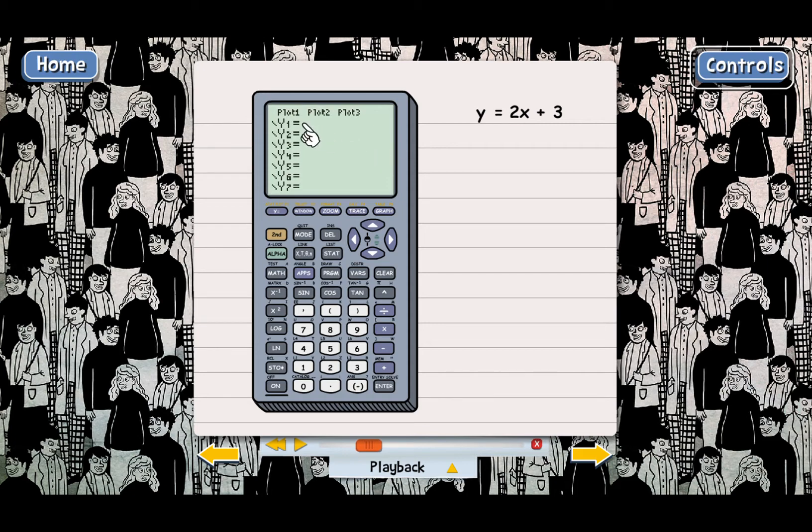See, there's a y1 equals, a y2 equals, a y3 equals, and it goes on down. The calculator has room to enter a lot of functions at once. That's what these are for, and that is useful in case you want to graph a system of equations or something. We're only going to enter in one equation here, so we just need to use this top line.